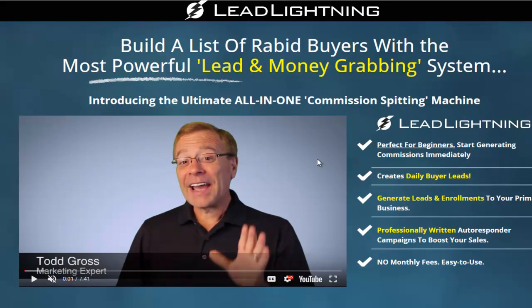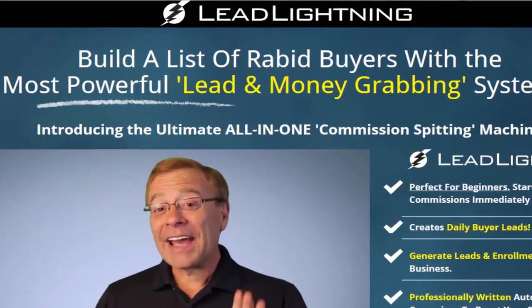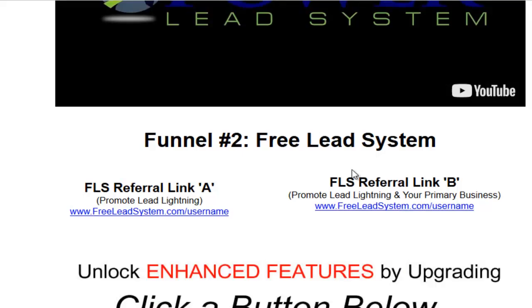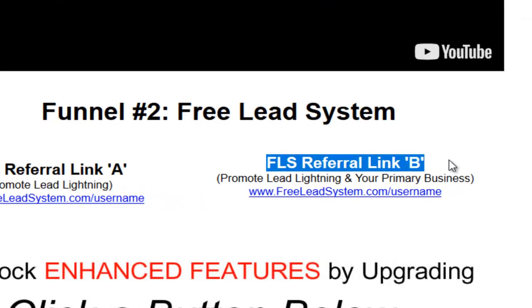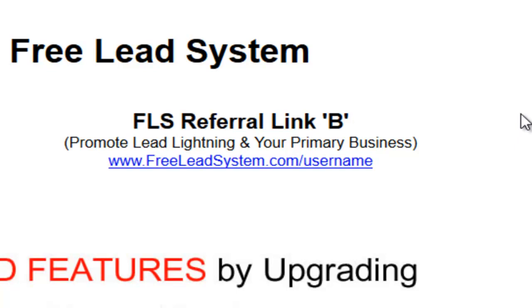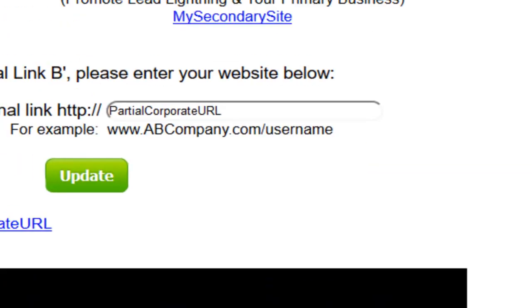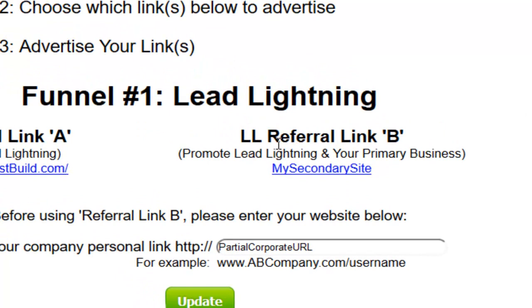For every single one of these people that do purchase Lead Lightning, you're going to receive a $6 commission as a Lead Lightning member. The autoresponder campaign for Referral Link B is going to promote Lead Lightning and your primary business, whatever business you choose, and that's going to work in exactly the same way as the Referral Link B for Lead Lightning.